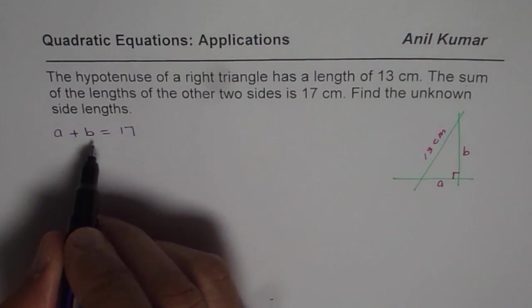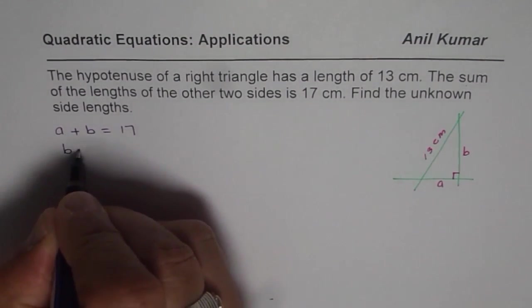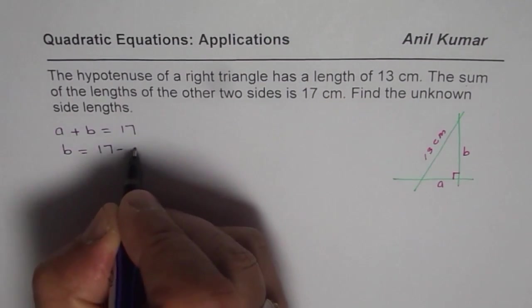Now we can write one side in terms of the other. So we can write B is equal to 17 minus A.